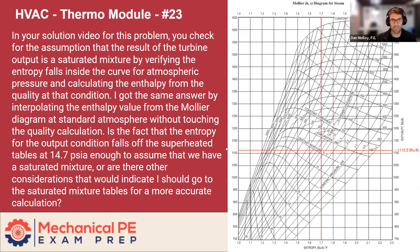In your solution video for this problem, you check for the assumption that the result of the turbine output is a saturated mixture by verifying the entropy falls inside the curve for atmospheric pressure and calculating the enthalpy from the quality at that condition. I got the same answer by interpolating the enthalpy value from the Mollier diagram at standard atmosphere without touching the quality calculation. Is the fact that the entropy for the output condition falls off the superheated tables at 14.7 PSIA enough to assume that we have a saturated mixture?